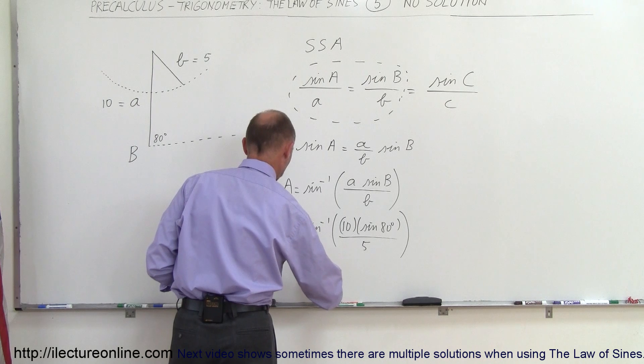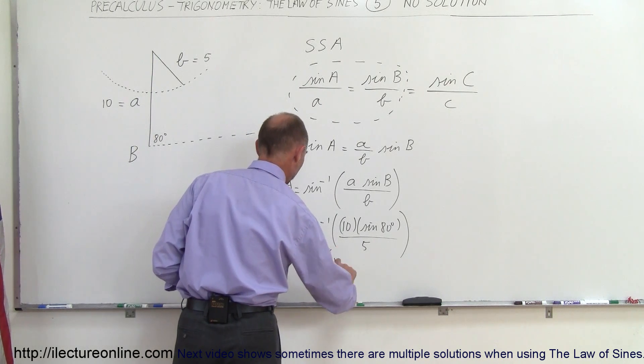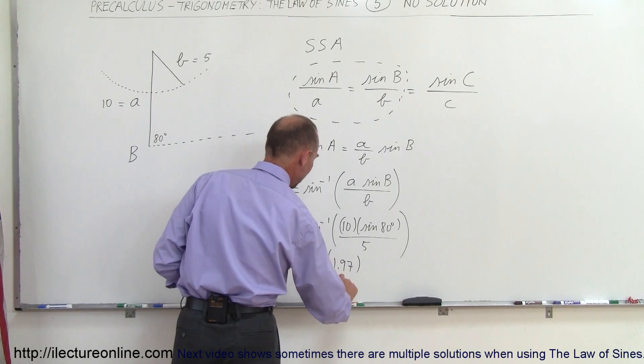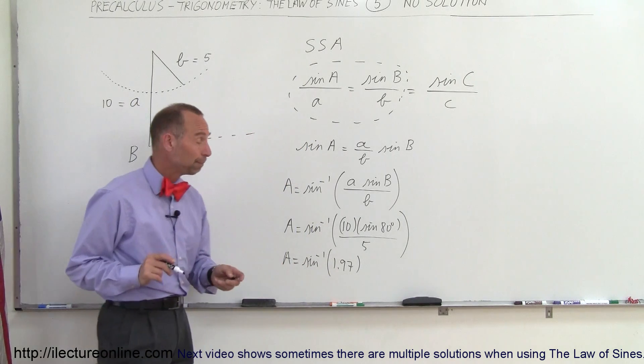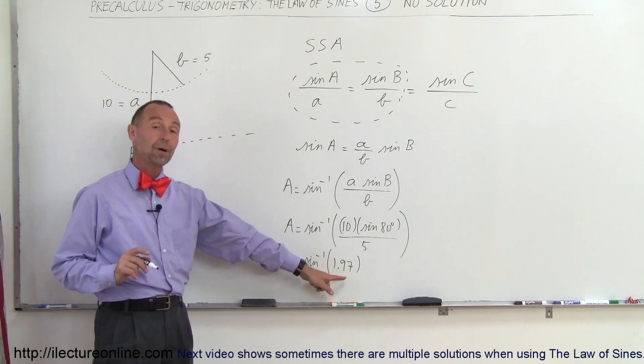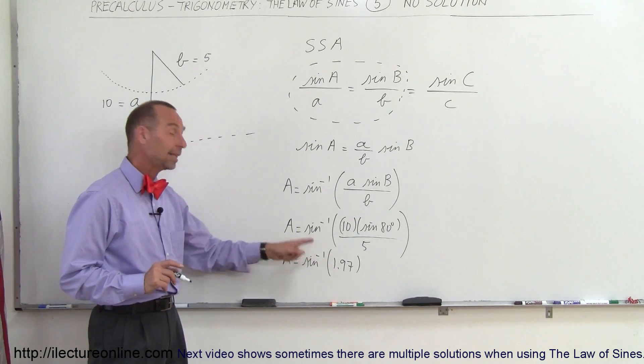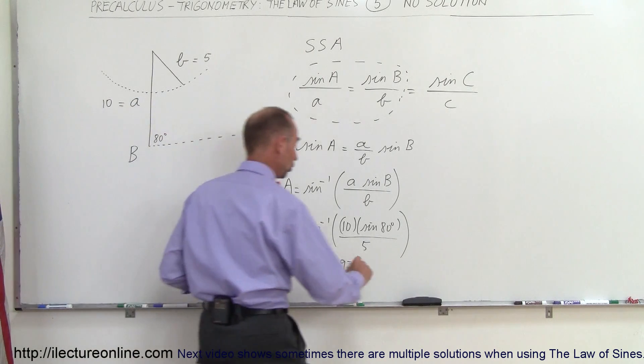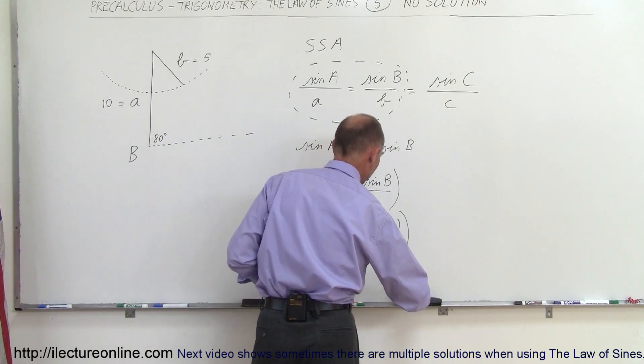So that means that A is equal to the inverse sine of 1.97. And here, this is where you have the problem. This number has to be between positive one and negative one in order to take the inverse sine of that. So that means there's no solution, no answer, there's no angle.